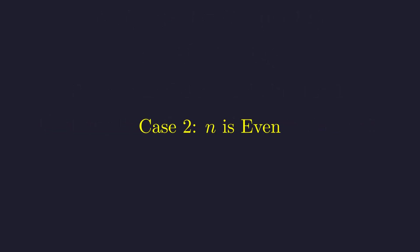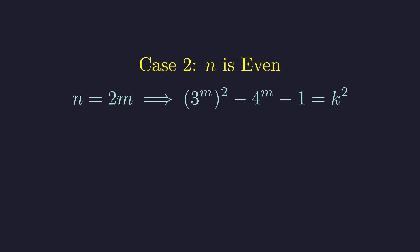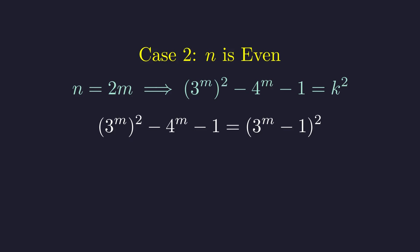Now, let's tackle the even case, which turns out to be much more interesting. If n is even, we can write it as 2m. Notice how this reveals that we already have one perfect square in our expression. So we're asking, for which values of m does our expression equal this perfect square?